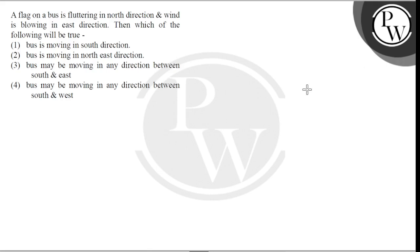So, suppose, here is our north-south-east-west direction. North, south, west and east. And flag can be fluttering in this direction. This is the direction of fluttering of flag. Flag can be fluttered.